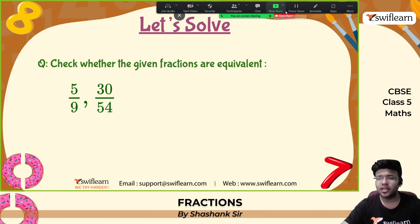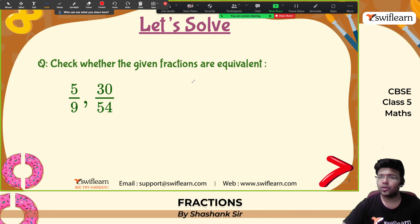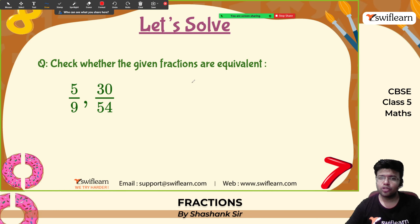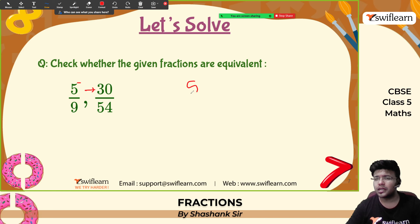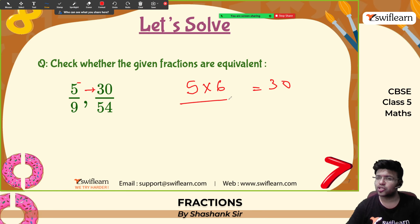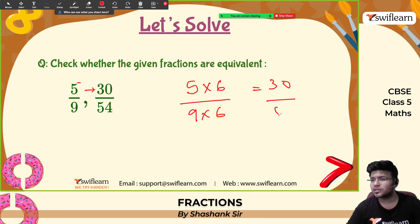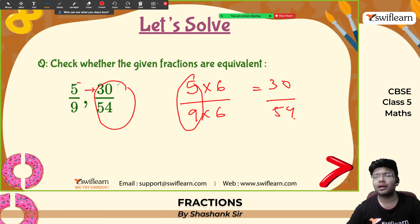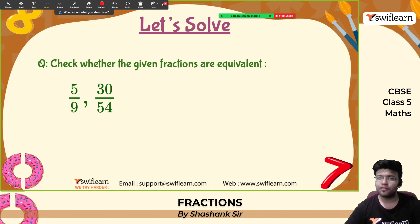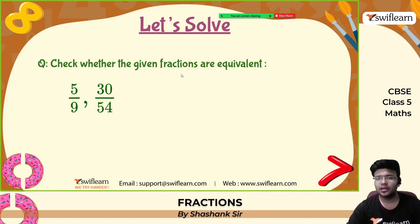Check whether the given fractions are equivalent or not. We have 5 and 30 — 5 multiplied by 6 will give me 30. Let us check with 9: 9 into 6 is 54. So 5 by 9 and 30 by 54 are equivalent fractions. They are equivalent fractions.